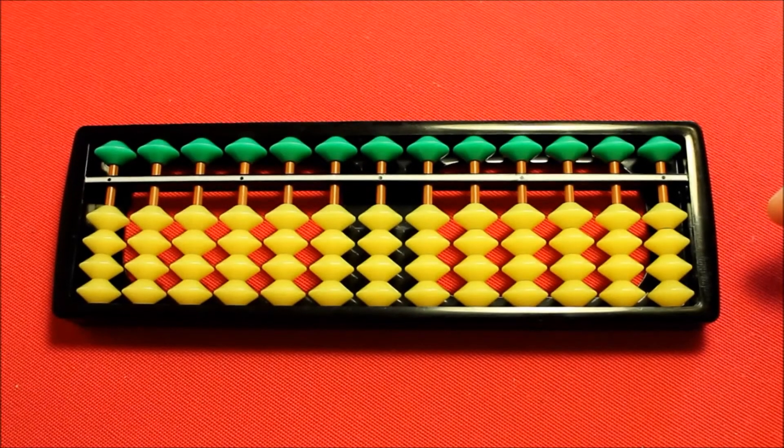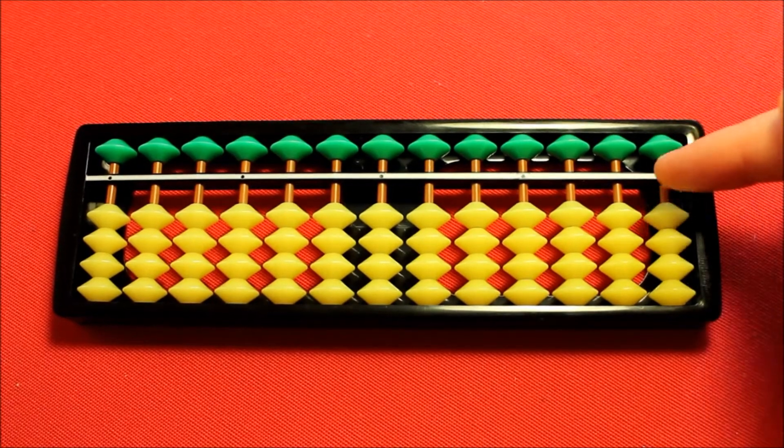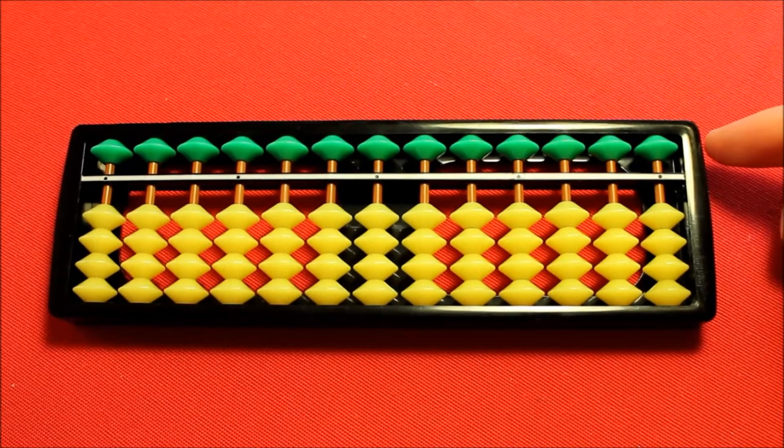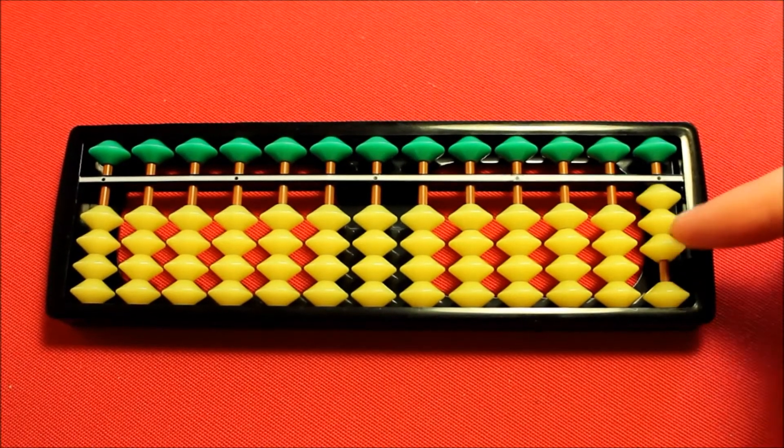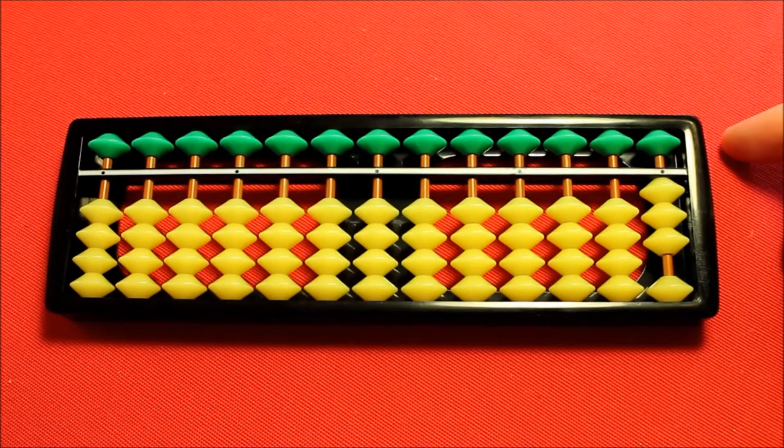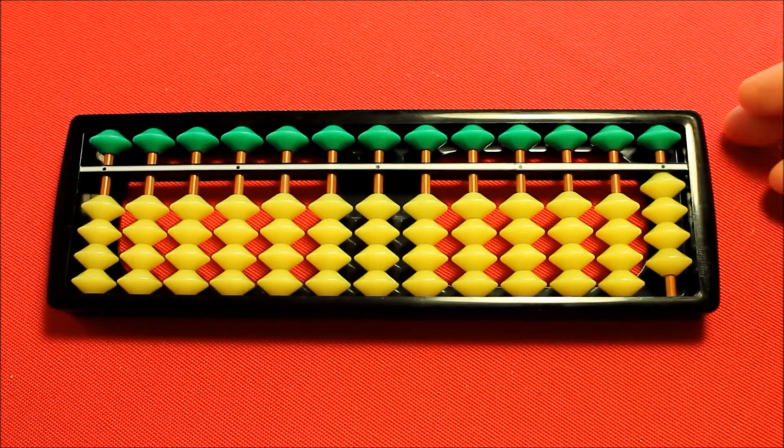First up I'll show you how to add by one and as always I'm going to use this right hand column to make it easier to see. Now often when you add by one it'll be very simple because you'll simply be able to add an earthly bead. So let's imagine that I started with three on the Soroban, let's add one to that, too easy, up it goes, three plus one equals four.